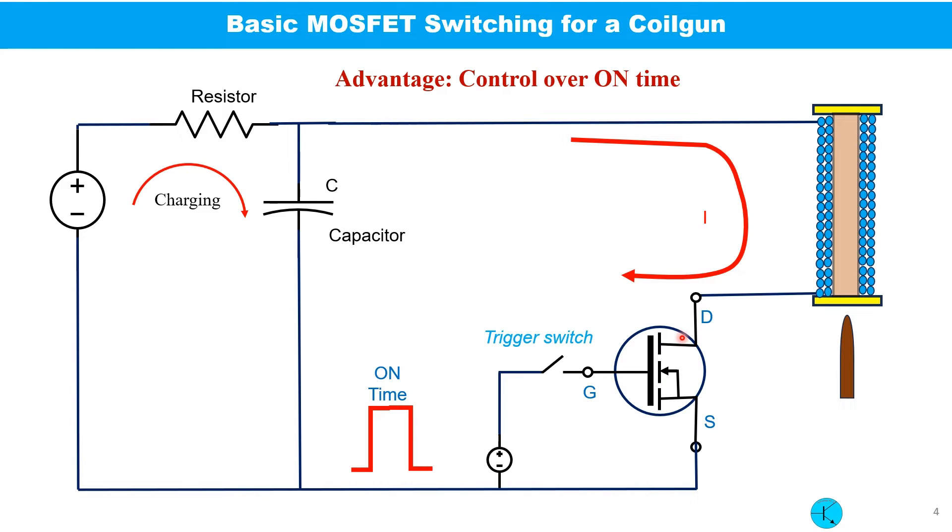In this diagram, the SCR is replaced with a MOSFET. With this circuit, the on time depends on the on time signal applied at the gate.